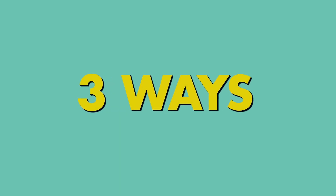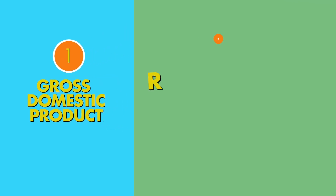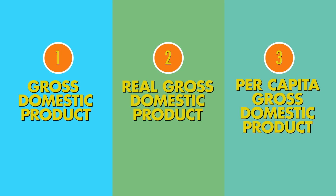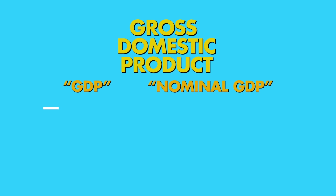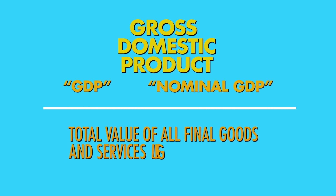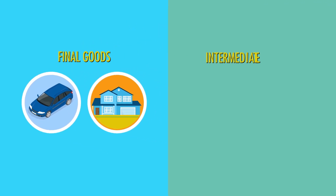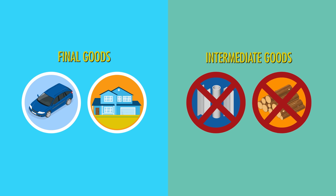There are three ways economists measure a nation's economic activity: gross domestic product, real gross domestic product, and per capita gross domestic product. Gross domestic product, also called GDP or nominal GDP, is the total value of all final goods and services that are legally produced within the country in a specific year. GDP includes final goods and services such as cars and houses. It excludes intermediate goods like the steel used to make cars and the lumber used to make houses, because the values of those items are included in the prices of the cars and houses.